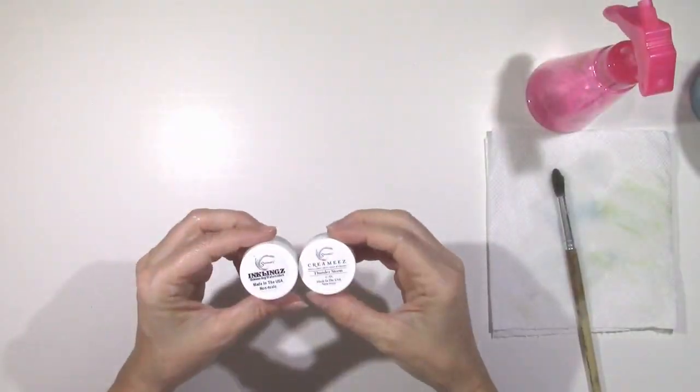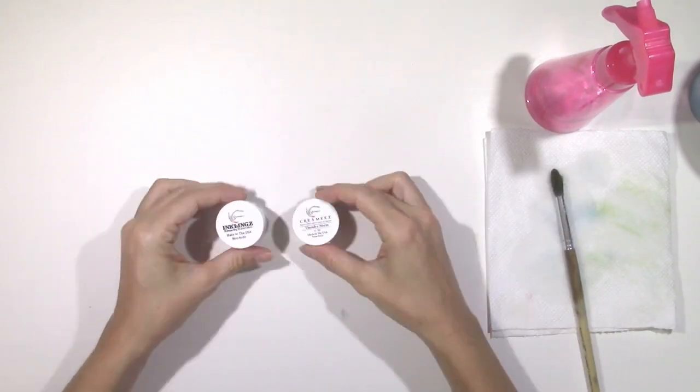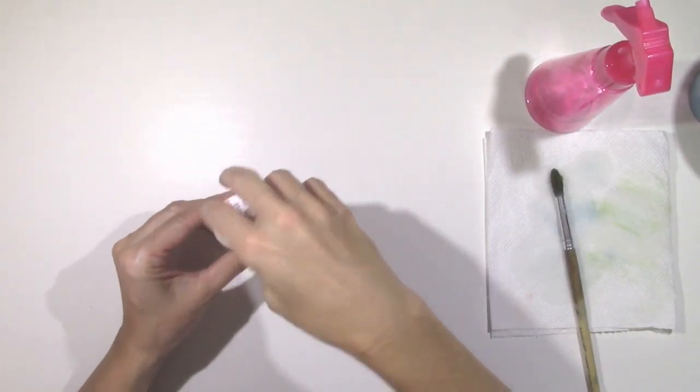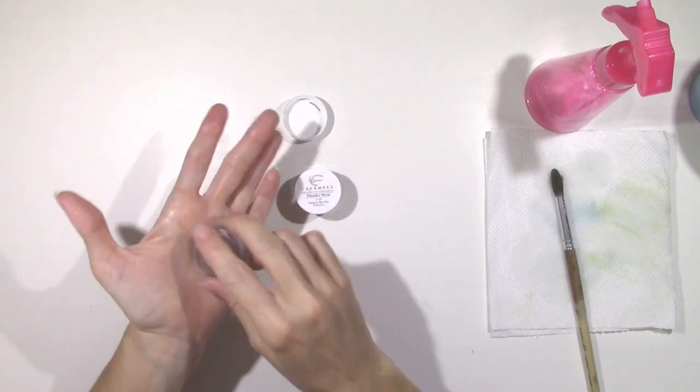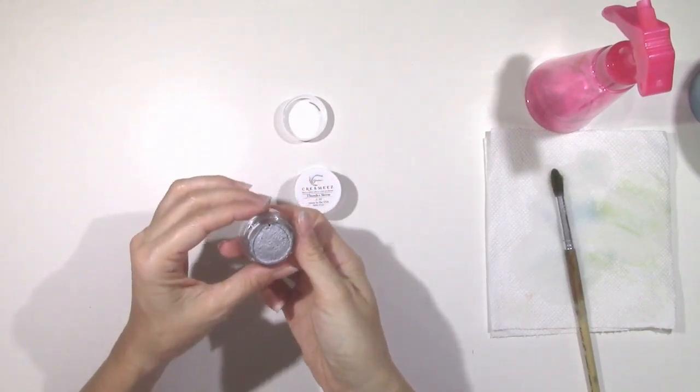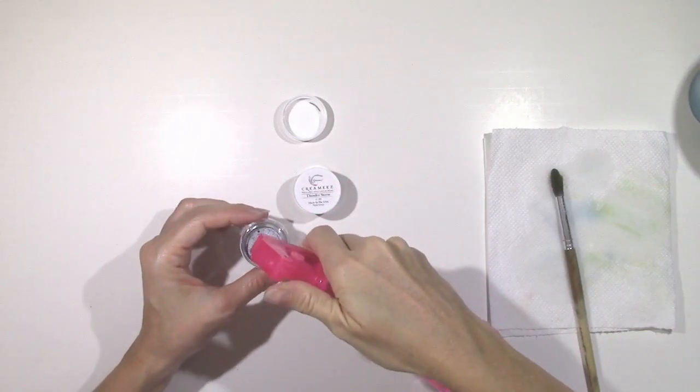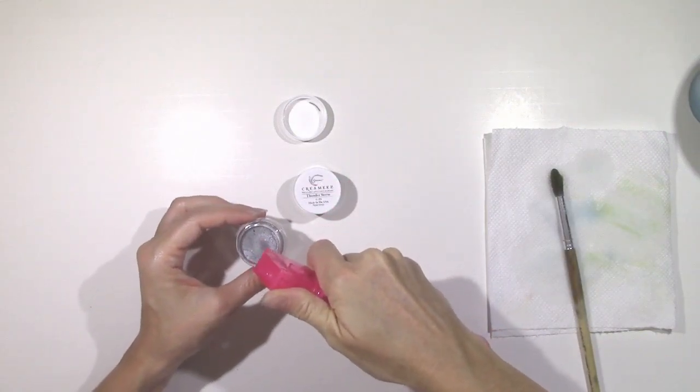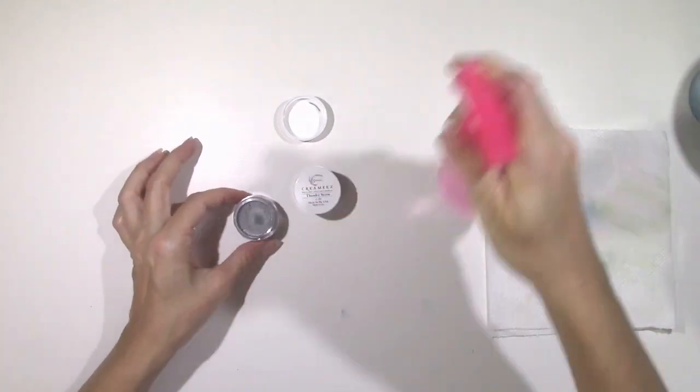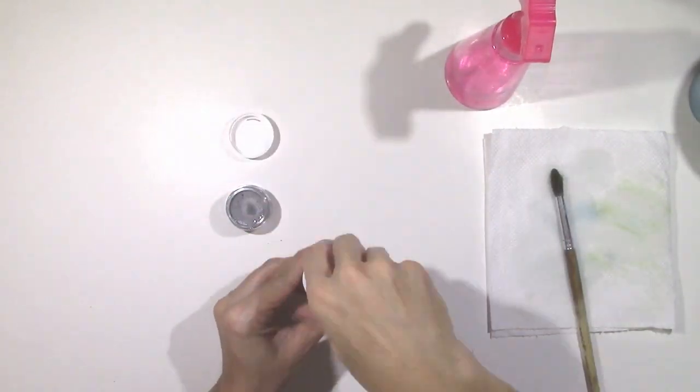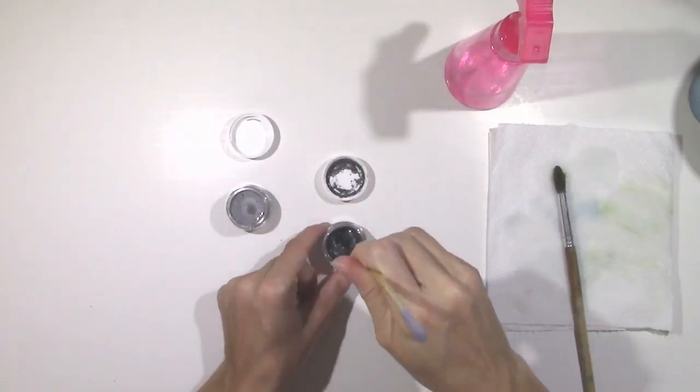Hey guys, it's Missy from Shimmers and today we're going to be looking at the difference between inklings and creamies. When you first get your product they're going to be hard and in cake form, so you're going to need to take some water and spray it into the container and let it sit for a little bit to activate the paint. You can start to stir it little by little, but it does need some time to soften up the paint.